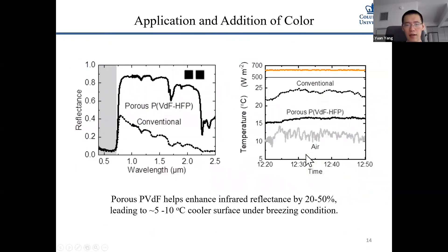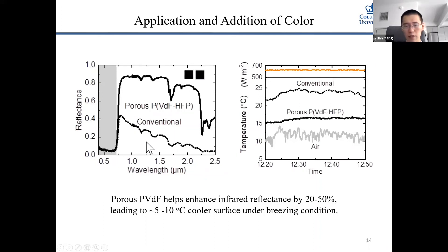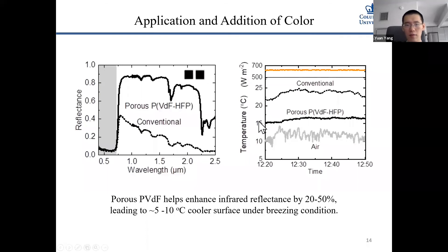The optical spectrum of this color cooling paint shows that for the black bi-layer paint, the infrared reflectance is almost 80%, while conventional black paint is about 30–40%. Under strong sunlight, the temperature of the conventional paint is 8 to 10 degrees Celsius higher than the bi-layer structure with porous PVDF, confirming that we have achieved a colored cooling paint.